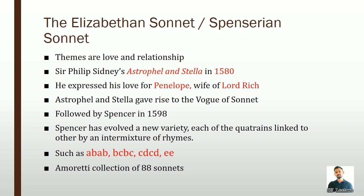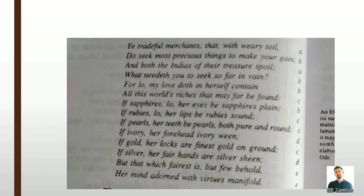This was followed by Spenser in 1598, who published 'Amoretti,' a sonnet sequence of 88 sonnets. Spenser developed a new variety in which each of the quatrains is linked by an intermixture of rhymes. The rhyme scheme Spenser used is a b a b b b c b c c d c d e e. Shakespeare's 154 sonnets were published in 1609.